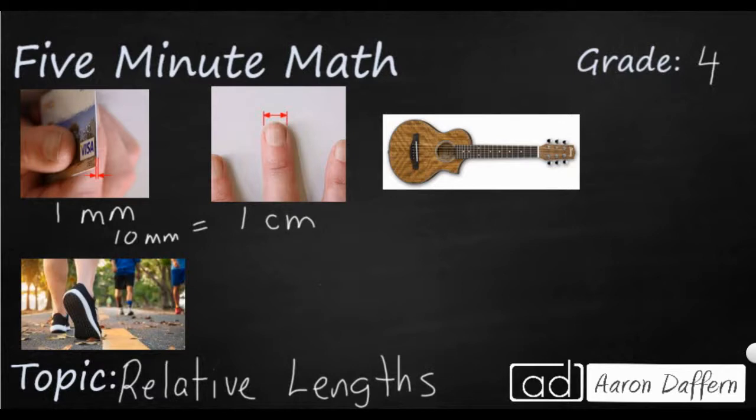So if you take ten of these credit card thicknesses you get about the width of your fingernails. If you look at your hand right now the width of your fingernail is about one centimeter. You'll typically see centimeters on rulers if you're measuring.